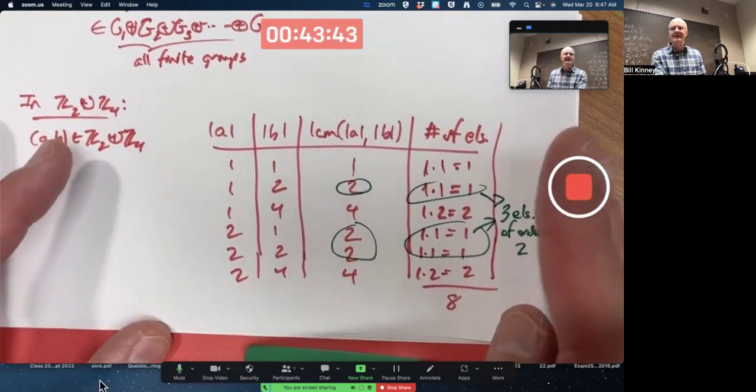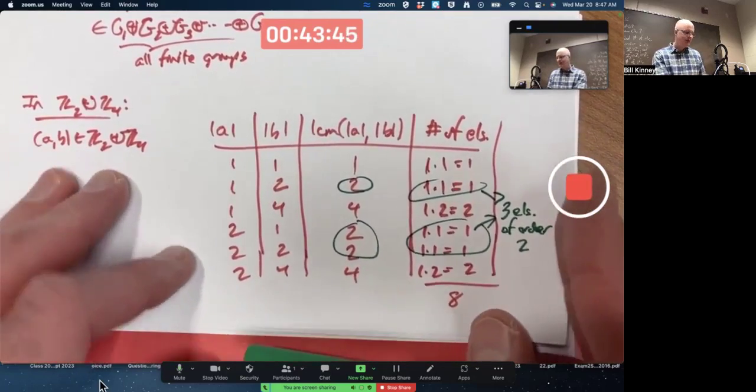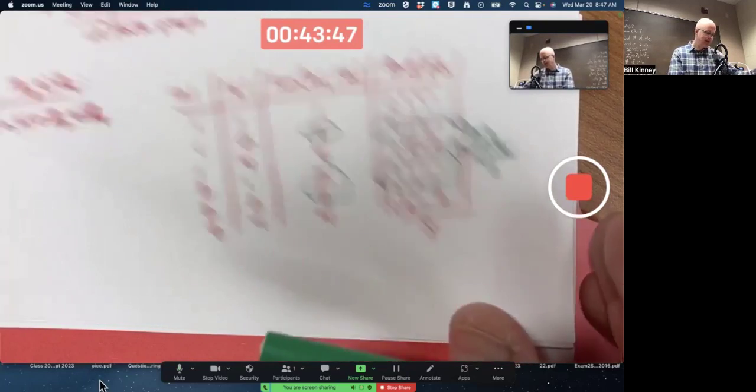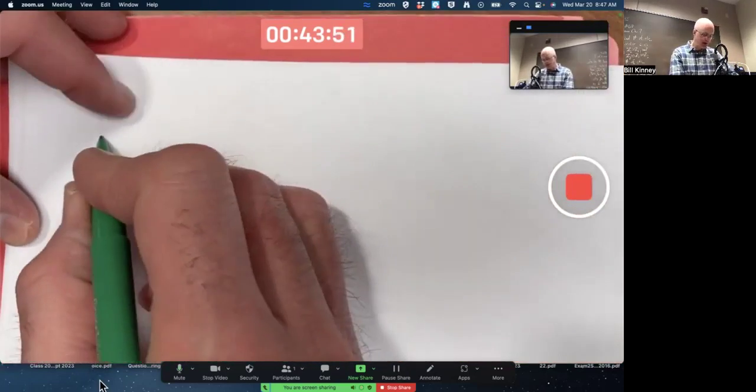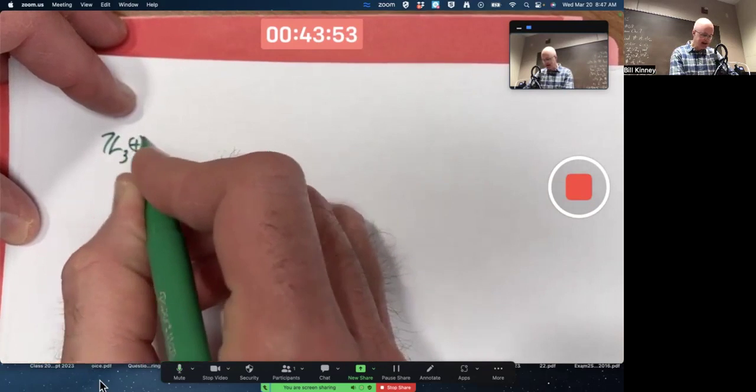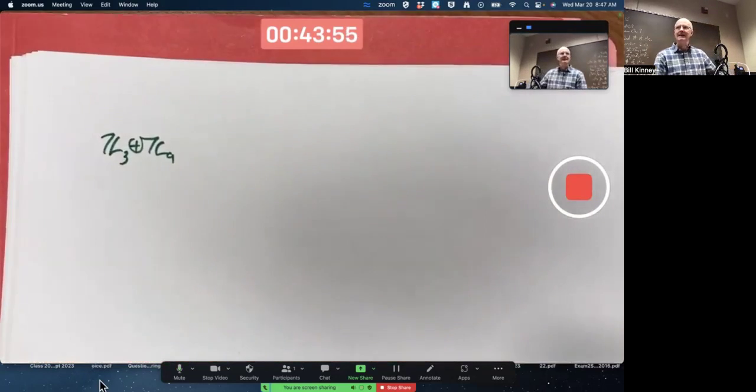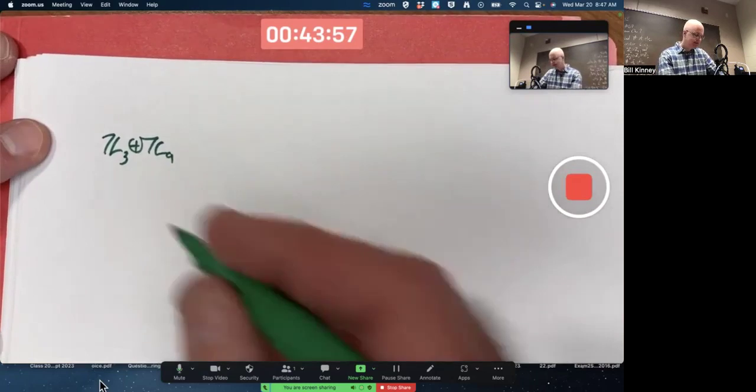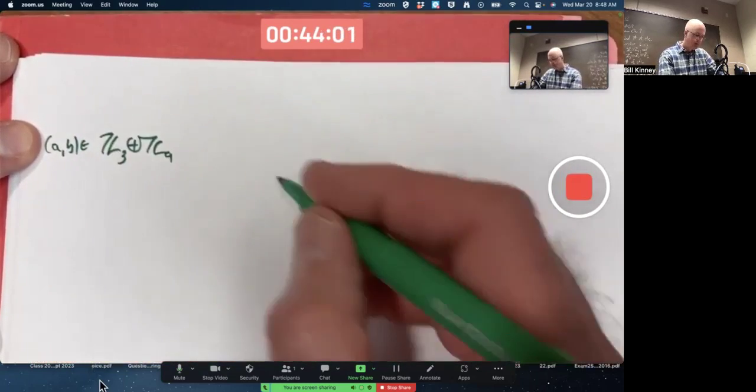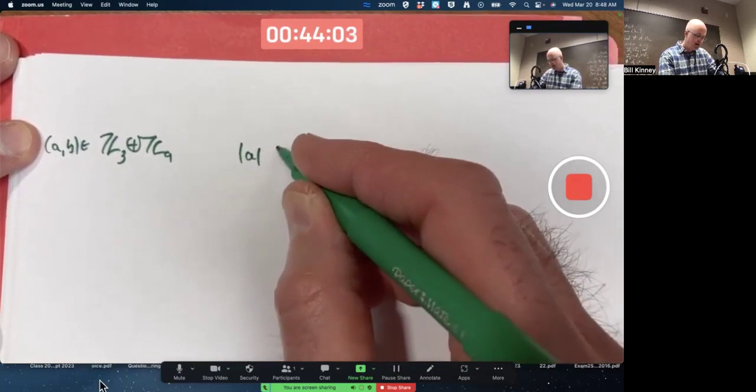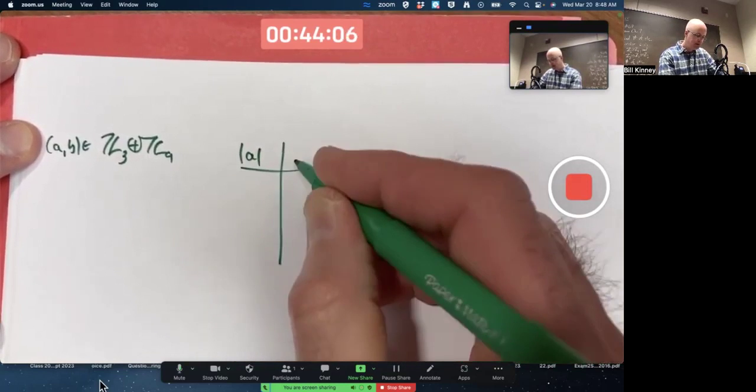Let's do a similar kind of analysis to end class very briefly with figuring out the number of elements of order three in the external direct product of Z3 and Z9, as quick as I can here. Got an arbitrary element in there. I can make a similar kind of table.